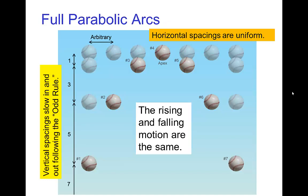Now if we want to consider a full parabolic arc, so like a ball thrown up into the air and then coming back down, all of this still applies. The horizontal spacings are uniform and constant. The vertical spacings follow the odd rule as they slow back out of the apex.